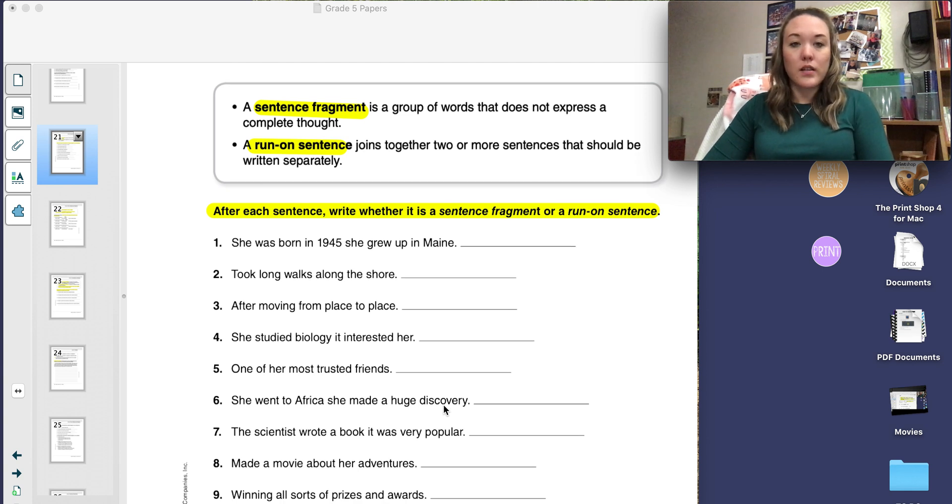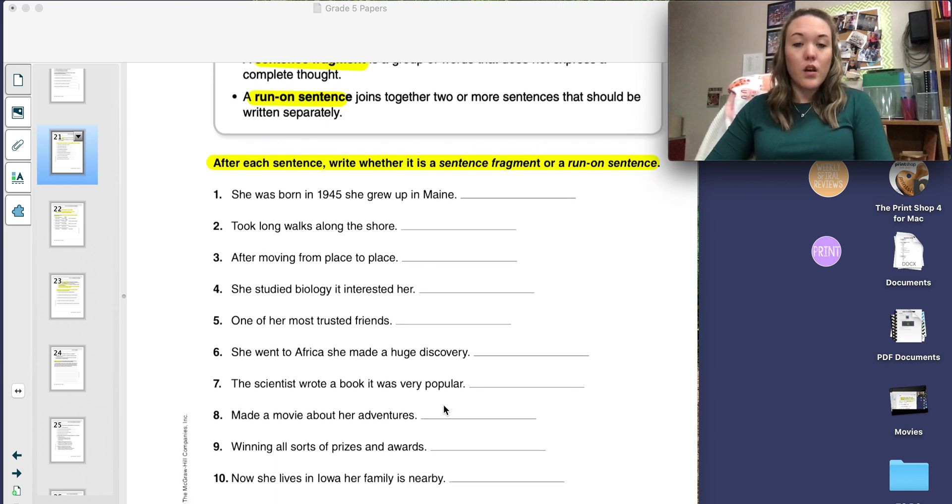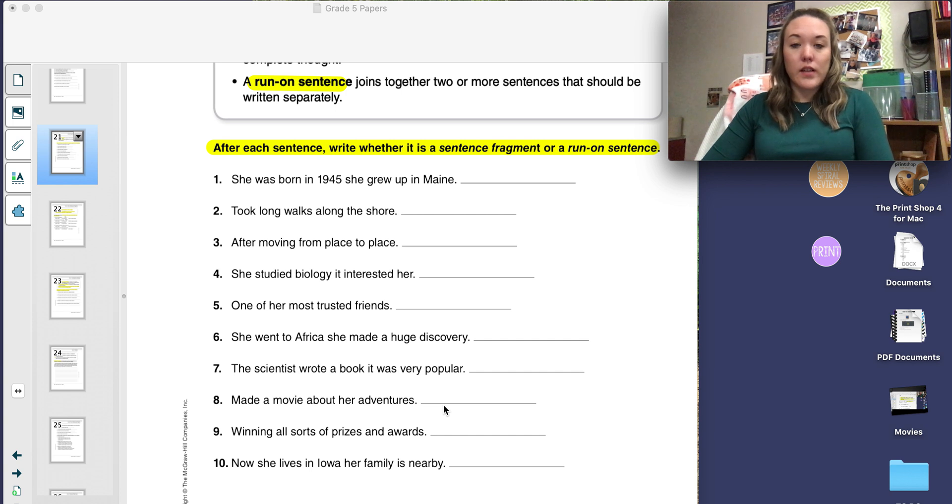On page 21, the box at the top reminds us that a sentence fragment is a group of words that does not express a complete thought. A run-on sentence joins together two or more sentences that should be written separately. On this page, after each sentence, you're going to write whether it is a sentence fragment or a run-on sentence. This should be review from third and fourth grade.